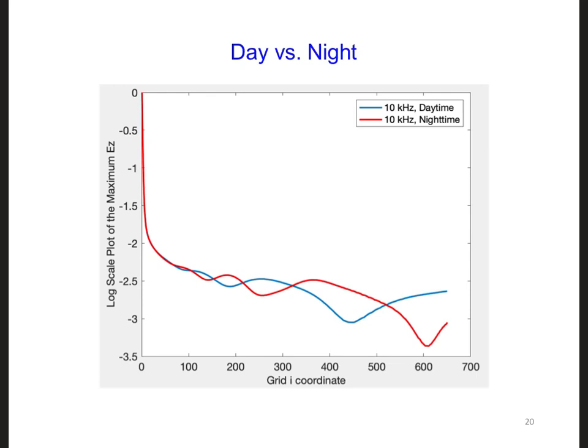Here are the results that I got for daytime versus nighttime ionospheric conditions. Since there is such a big difference between the behavior of these two waveforms, we can see that the propagation of VLF waves is greatly impacted by the state of the ionosphere.